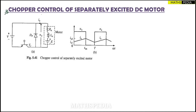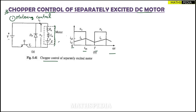In this video we'll be discussing the chopper control of a DC separately excited motor. We'll start with the motoring control part. The circuit includes the motor components: armature resistance Ra, inductance La, and back-EMF E. The graph showing the relevant waveforms will also be discussed as we proceed.